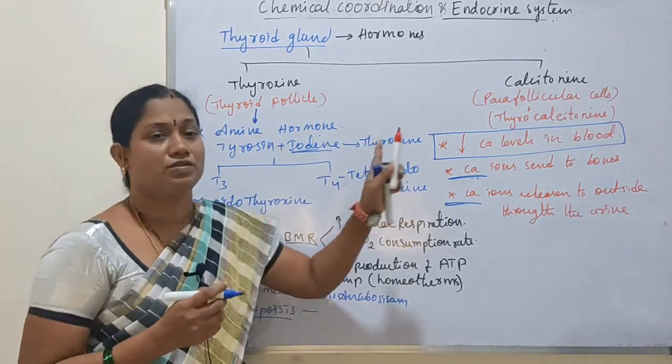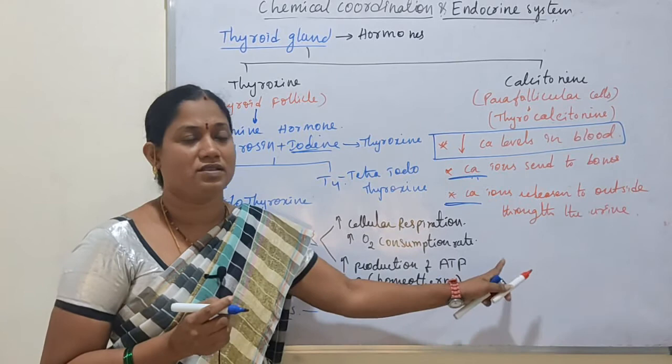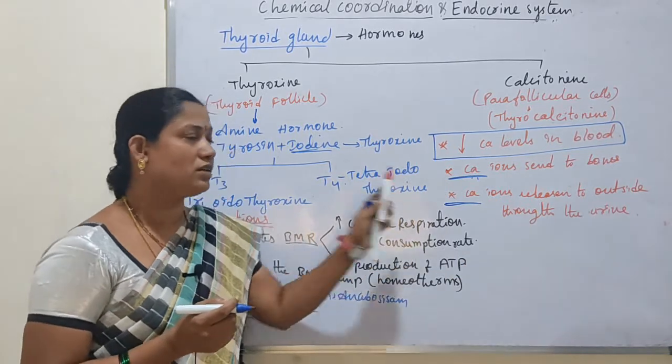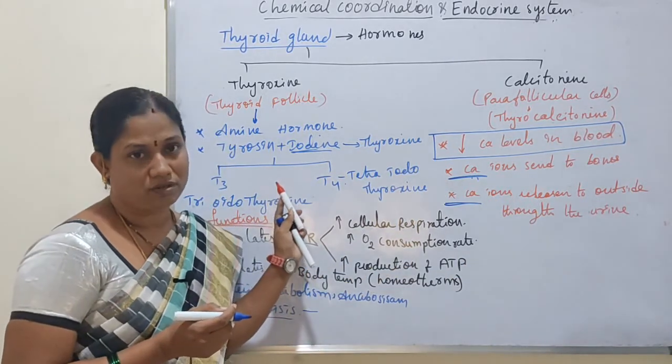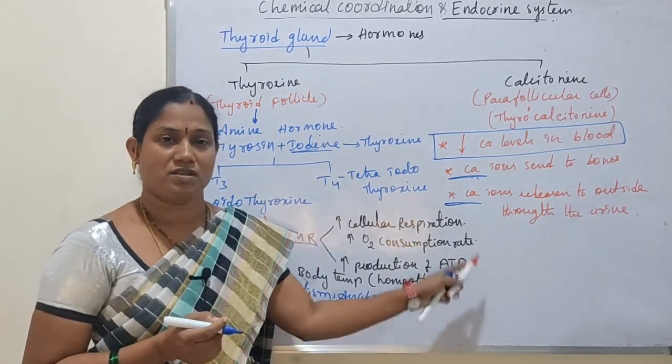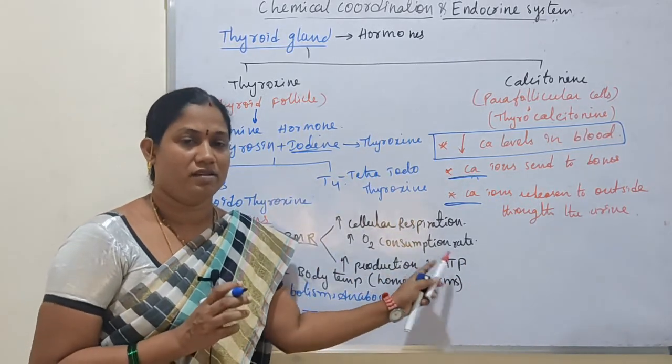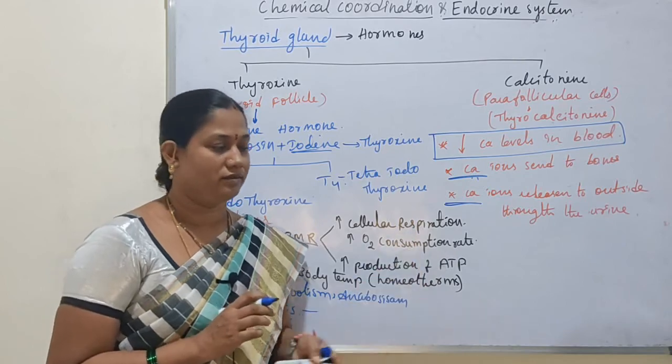So calcitonin's main function is to decrease calcium levels in the blood. Both thyroxine and calcitonin hormones are secreted by the thyroid gland.